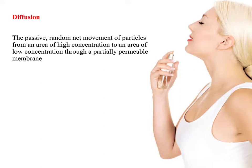So let's take this definition to start with that we've got here on the first screen. We define diffusion as the passive random net movement of particles from an area of high concentration to an area of low concentration, typically through a partially permeable membrane.